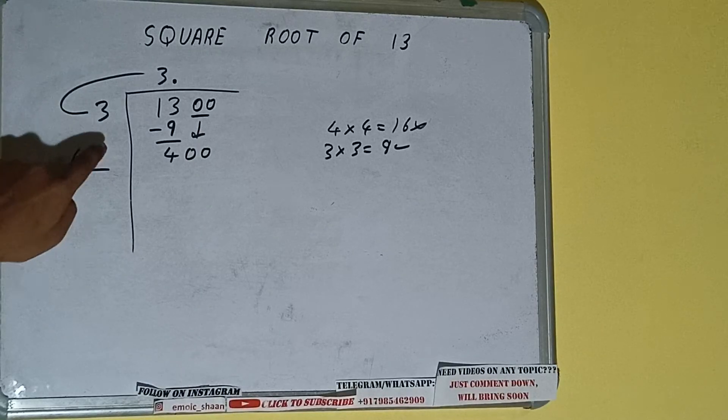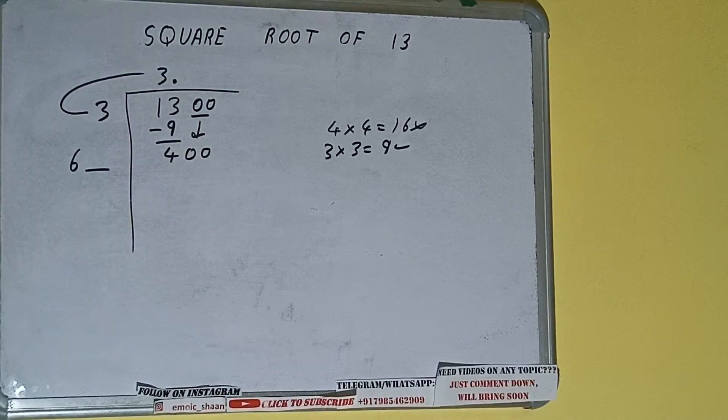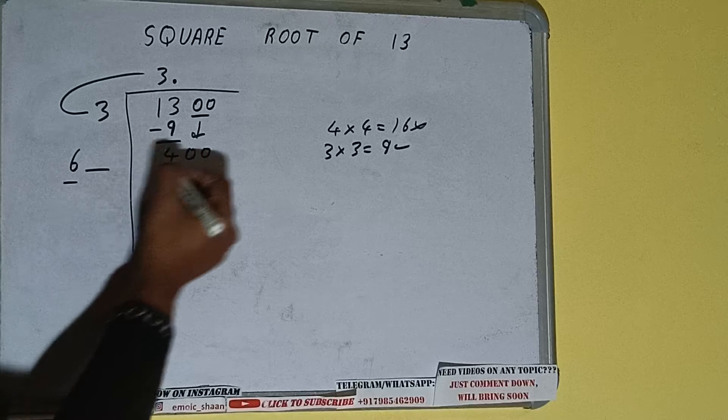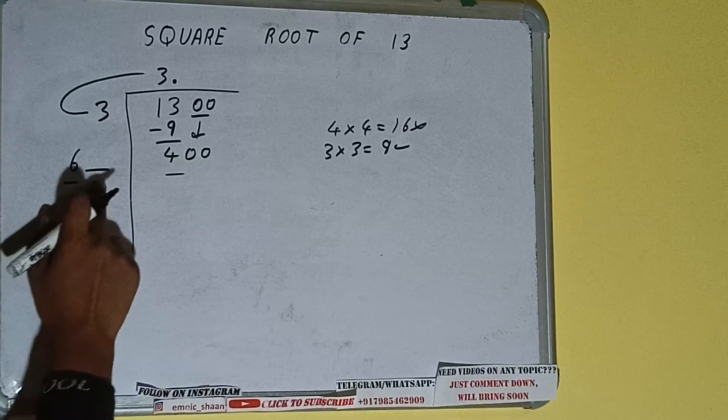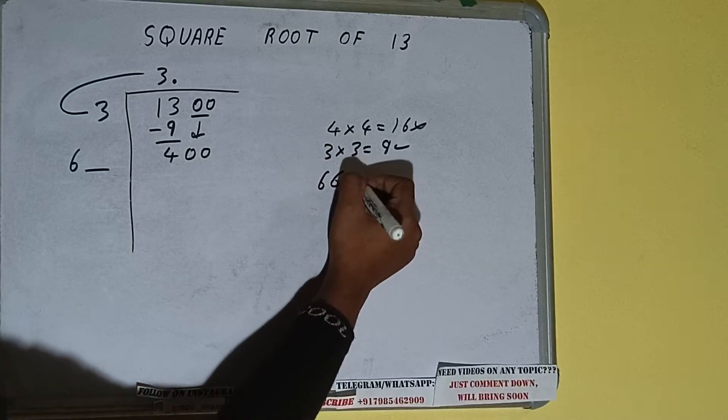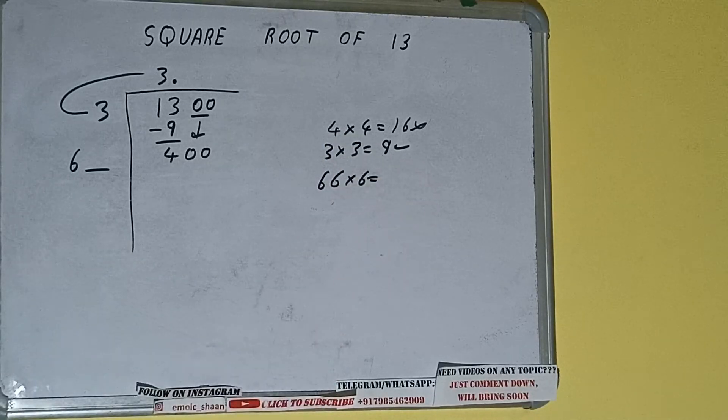Now whatever number we write here, we have to write here also, so we can compare this 6 and 40. So 6 times 6 is 36, right? So we can try 6 times. 66 into 6 we can try.